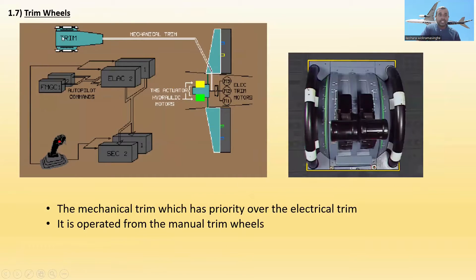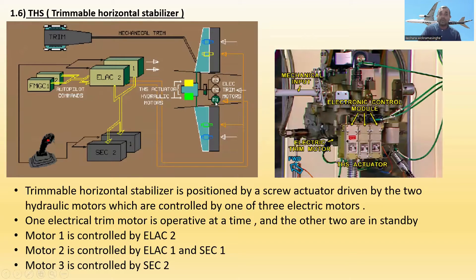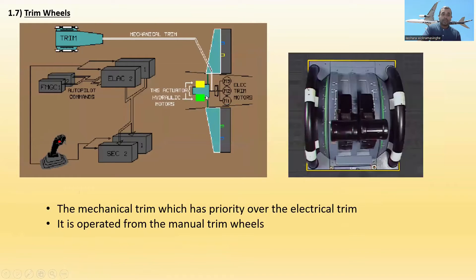1.7 — Trim wheels. Here is the trim wheel in the cockpit. The mechanical trim has priority over the electrical trim, and it is operated from the manual trim wheels. The mechanical trim input goes directly to the THS actuator — which has two hydraulic motors and three electric motors. There are also two hydraulic actuators: yellow and green.